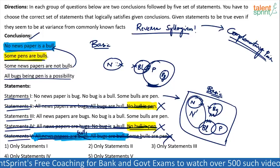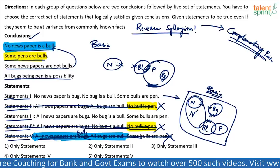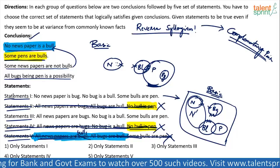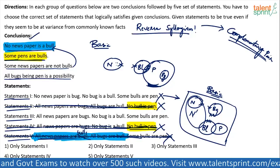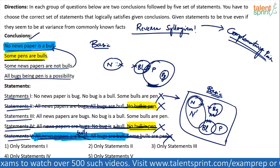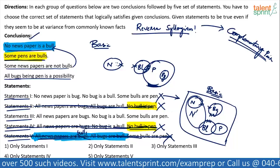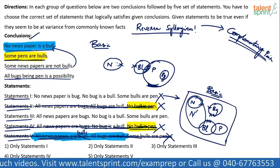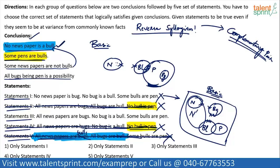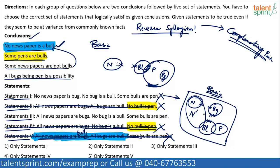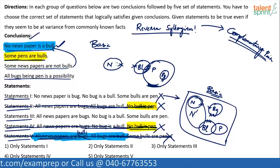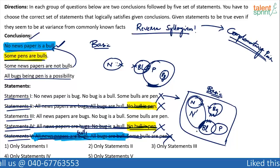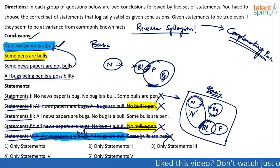Does 'no newspaper is a bull' satisfy? It satisfies the basic diagram, but will it always? No — I can draw a larger newspaper circle that overlaps with bull. With the statements 'no newspaper is a bug, no bug is a bull, some bulls are pen,' I can still draw an n-dash diagram where some newspapers are bulls. The conclusion says 'no newspaper is a bull,' but here I find some newspapers are bulls — a contradiction. So the first set is also wrong.